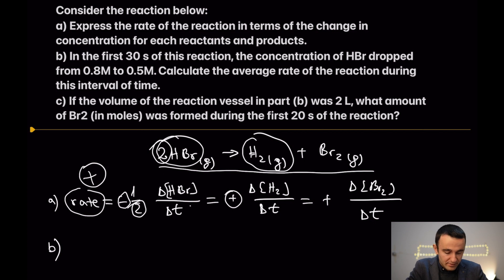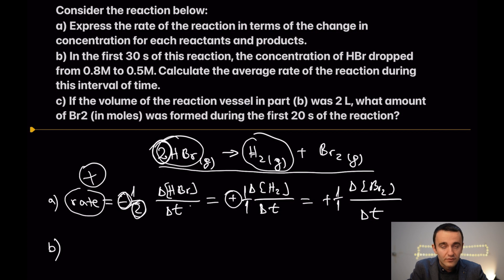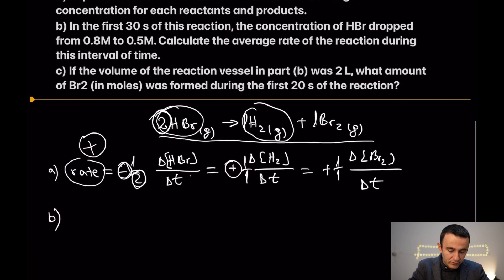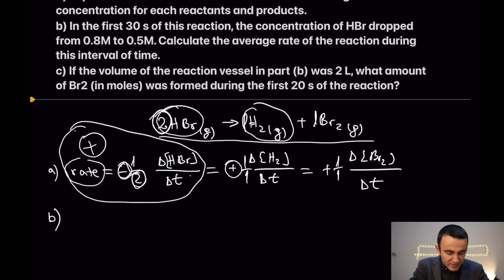You have to be careful about two things: the minus sign for the reactant, and the stoichiometric coefficients that are included when you express the rate. Even here there is a coefficient, but it's one over one because we have a coefficient of one for each of those species. Now let's move to part B. In the first 30 seconds of this reaction, the concentration of HBr dropped from 0.8 to 0.5 molar. Calculate the average rate of the reaction during this interval of time. We are going to deal only with the HBr term.